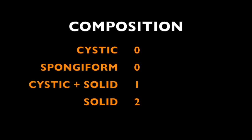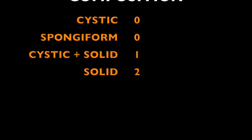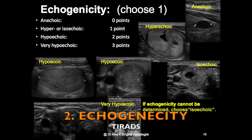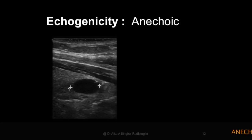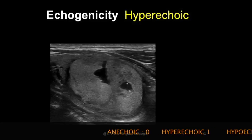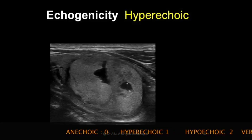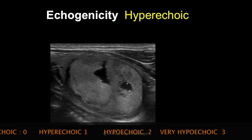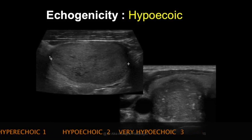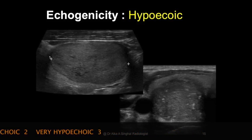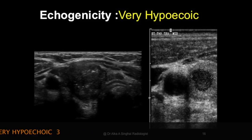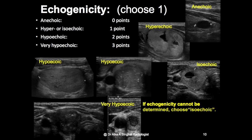For echogenicity, anechoic gets a score of zero; hyper- or isoechoic gets a score of one; hypoechoic gets a score of two; and very hypoechoic — even more hypoechoic than the muscle layer — gets a score of three, which is really pointing to a sinister etiology.